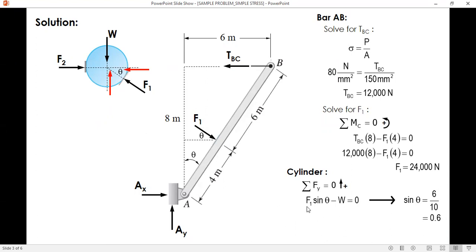Next we substitute the value of F1 and the value of sin theta. For weight, it's mass times g, mass times acceleration due to gravity. Transpose this term, and after multiplying the two values, divide by 9.81. The mass is equal to 1,468 kilograms.